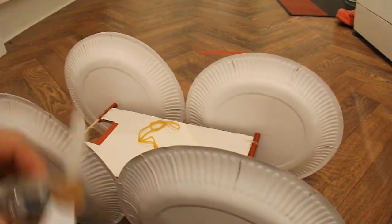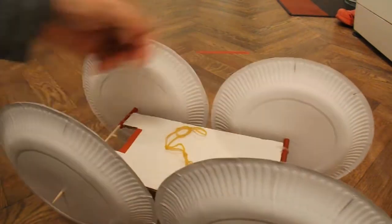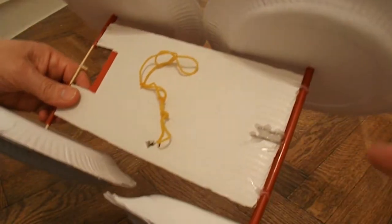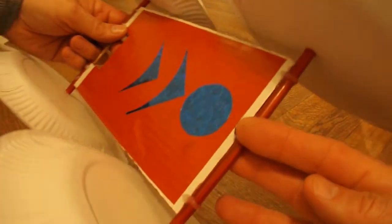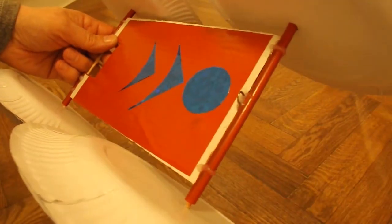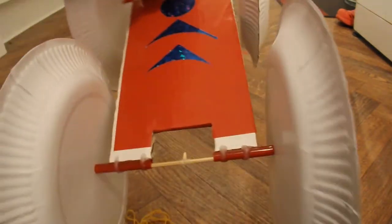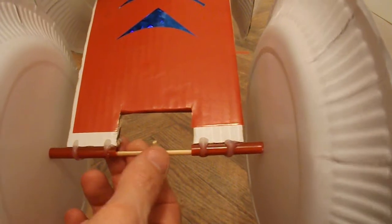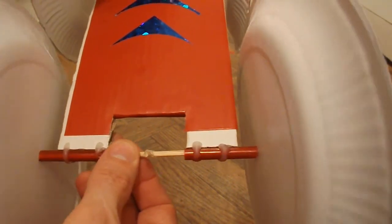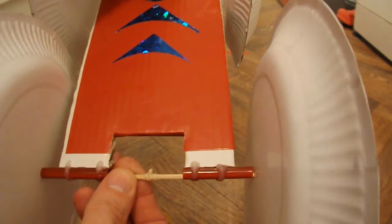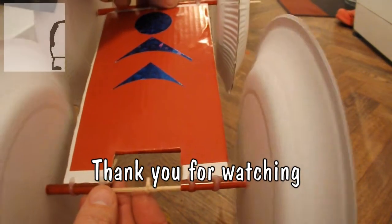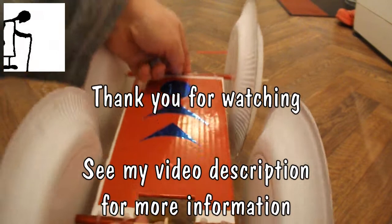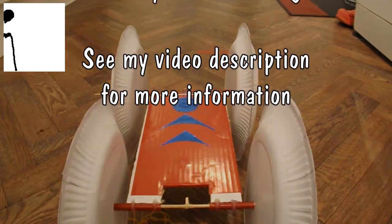If we just take that off again. There's a paper clip there. That sticks up the front there to hook the rubber band onto. And on the back there's a piece of barbecue skewer stuck to the axle to hook the rubber band onto at the back. And that's it. Job done.